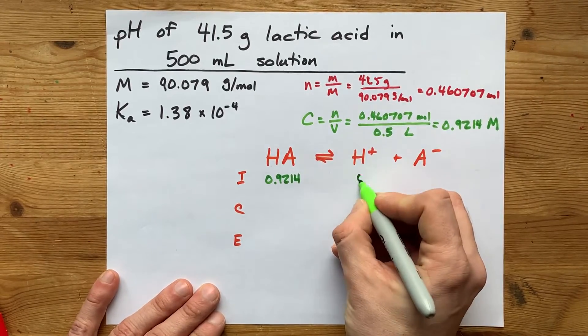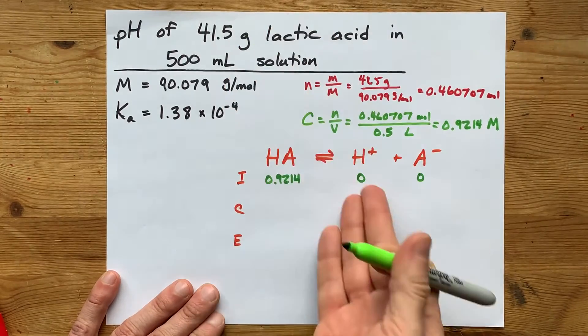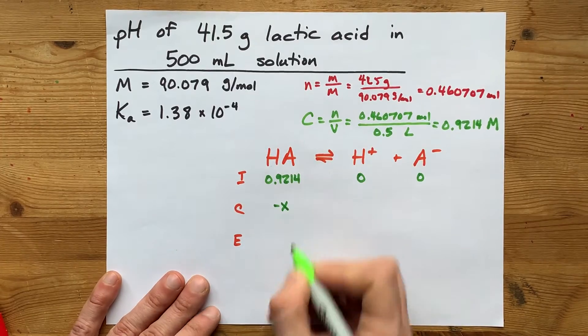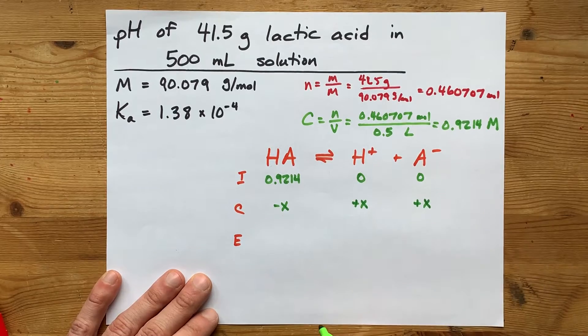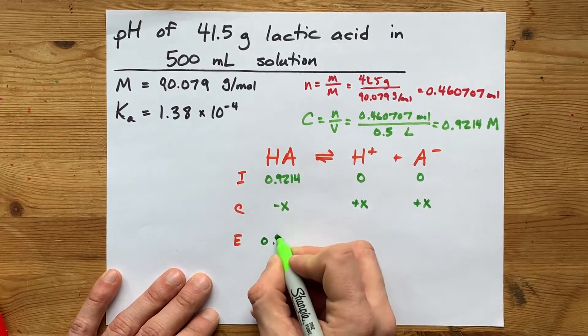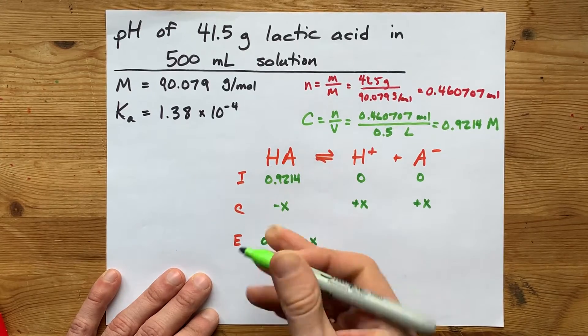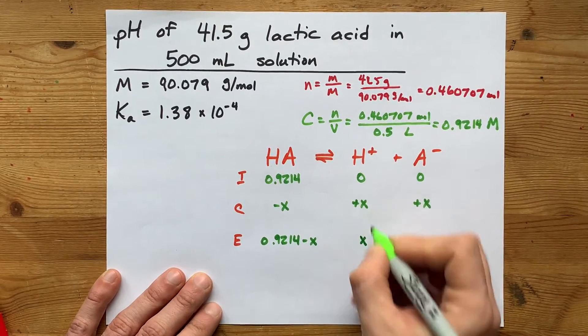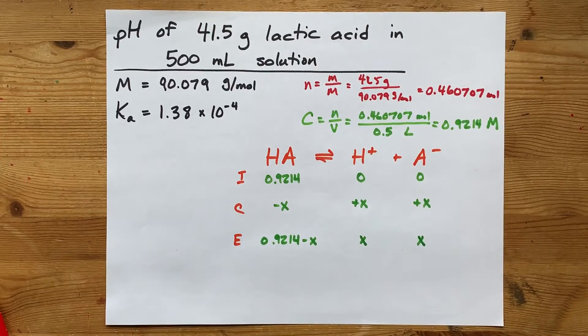I'm going to assume that I have no H plus or conjugate base to start with, because we're not dissolving any of those directly into solution. Then the acid dissociates some to give you H plus and its conjugate base. So your equilibrium concentrations are 0.9214 minus X for the remaining acid, X for the amount of H plus that was formed, and X for the amount of conjugate base that was formed.